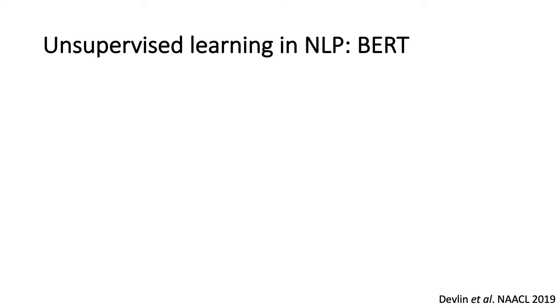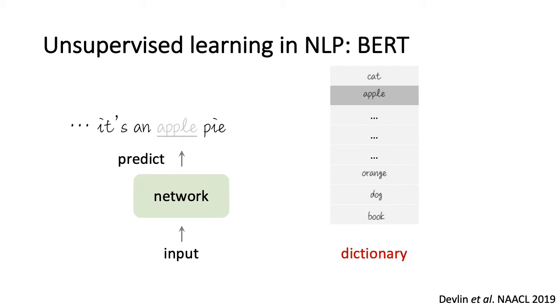In the past years, unsupervised learning has been very successful in NLP, for example, as shown by BERT. In an NLP pre-text task, given an input, the network is asked to predict one or multiple words. Using a dictionary of words, a loss can be defined as a dictionary lookup problem. A query is matched to a key in the dictionary.